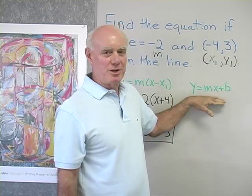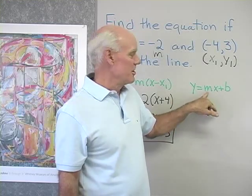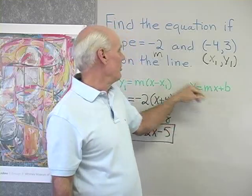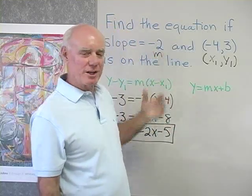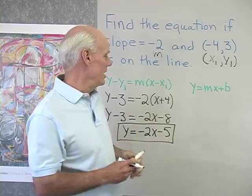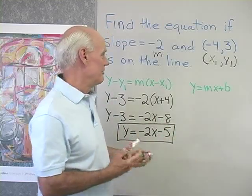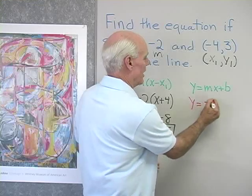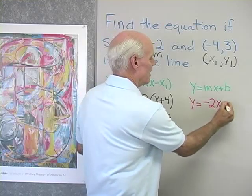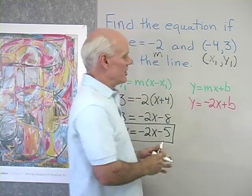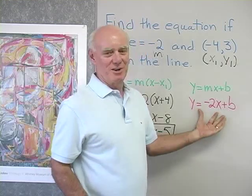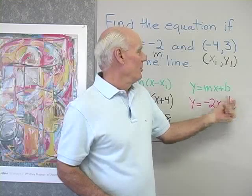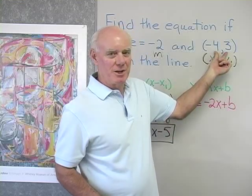If I'm going to use the slope-intercept form, I need two things: the slope m and the y-intercept b. I have the slope m — it's negative two — so I can start by substituting negative two for m, giving me y equals negative two x plus b. That's almost the equation of the line; I just need to find the y-intercept b.